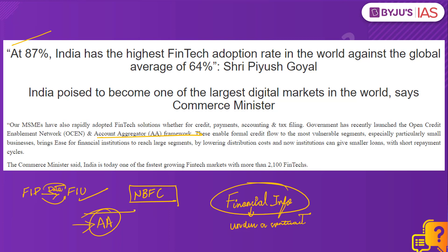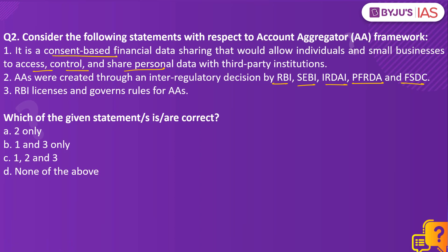The account aggregator will replace lengthy blank-check acceptance terms and conditions with specific, step-by-step permissions, giving customers control over their data. Going back to the question: statement one is correct — it is indeed a consent-based financial data sharing framework. Statement two is also correct — the framework was created through an inter-regulatory decision by RBI, SEBI, IRDAI, PFRDA and FSDC. Statement three is also correct — licenses are issued by RBI and RBI governs the rules. Therefore, the right answer is option C: one, two and three.